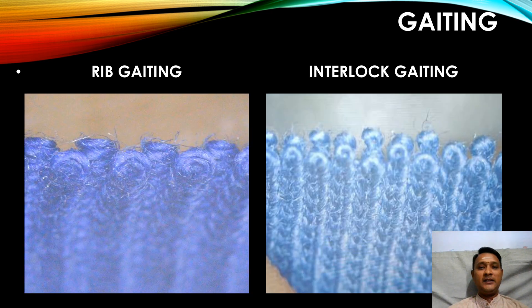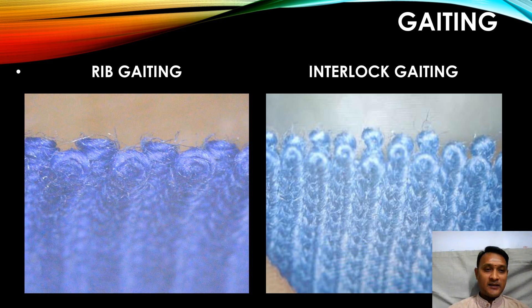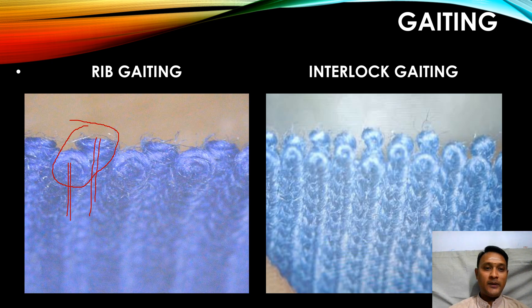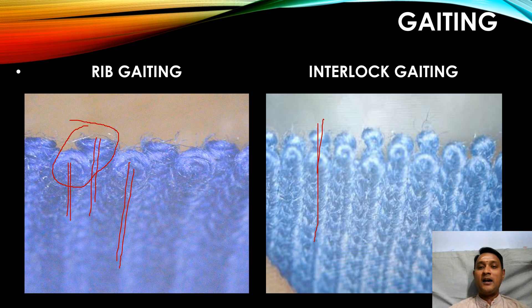Let me show you an image that explains rib gating and interlock gating in a better way. In this image, you can see that the face loop and back loop are not facing each other — the back loop is placed in between two face loops. Whereas in interlock gating, you can see the face loop and the back loop are facing each other. This is how each fabric will look.